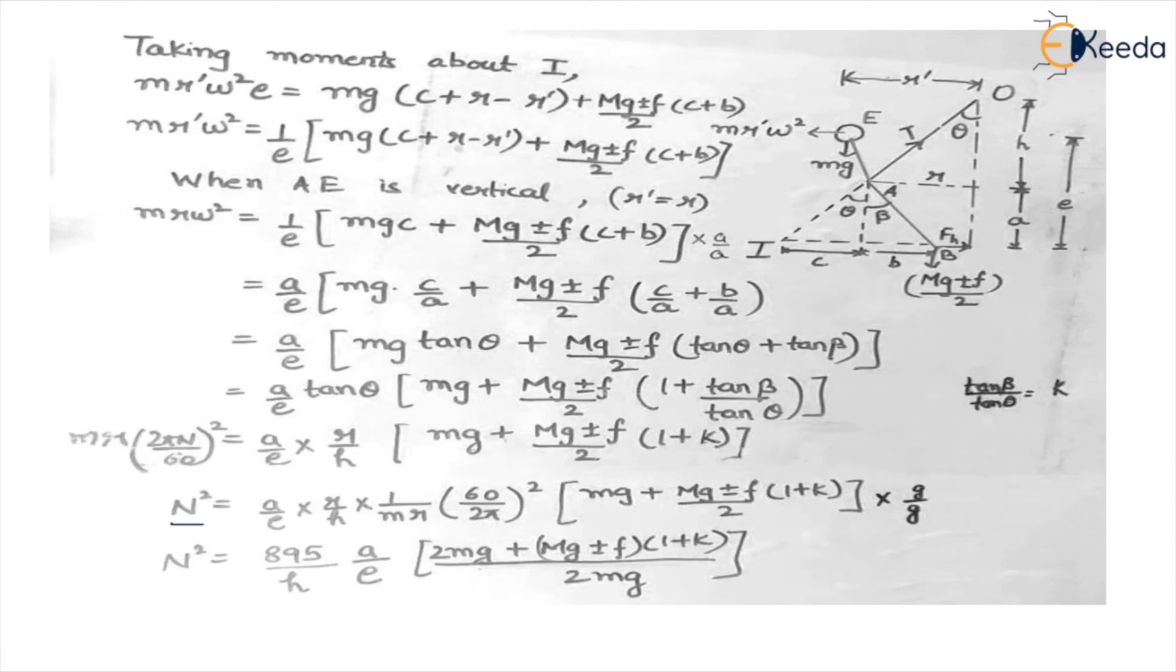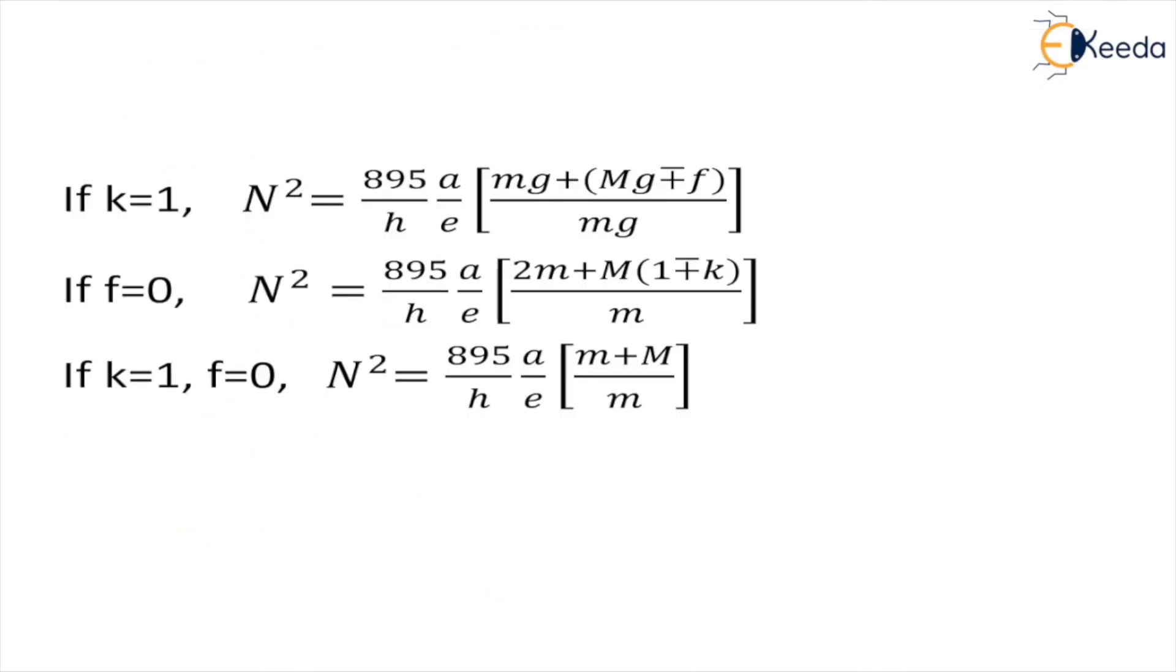You have to understand what is E. E is basically the distance of this extension link from this horizontal axis of this instantaneous center. Whenever we are having cases when K is equal to 1 that is tan theta upon tan beta is 1, equation becomes this. When force of friction is not acting equation becomes this. The force of friction becomes 0. And when K is 1 and friction is 0, the equation becomes this.